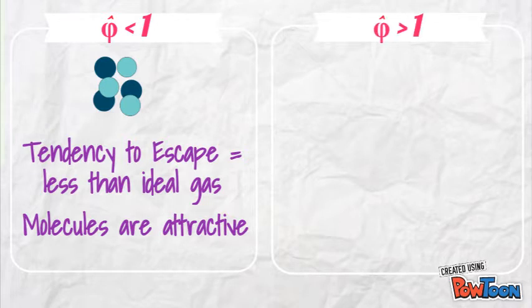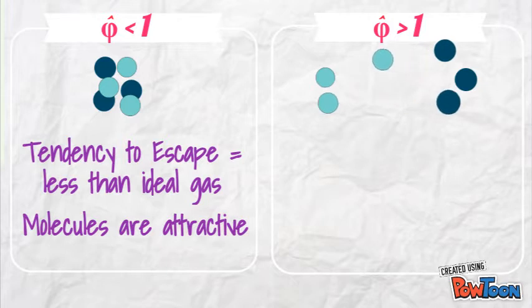When phi is greater than 1, the opposite occurs. The molecules do not like one another, and thus, are more repulsive.